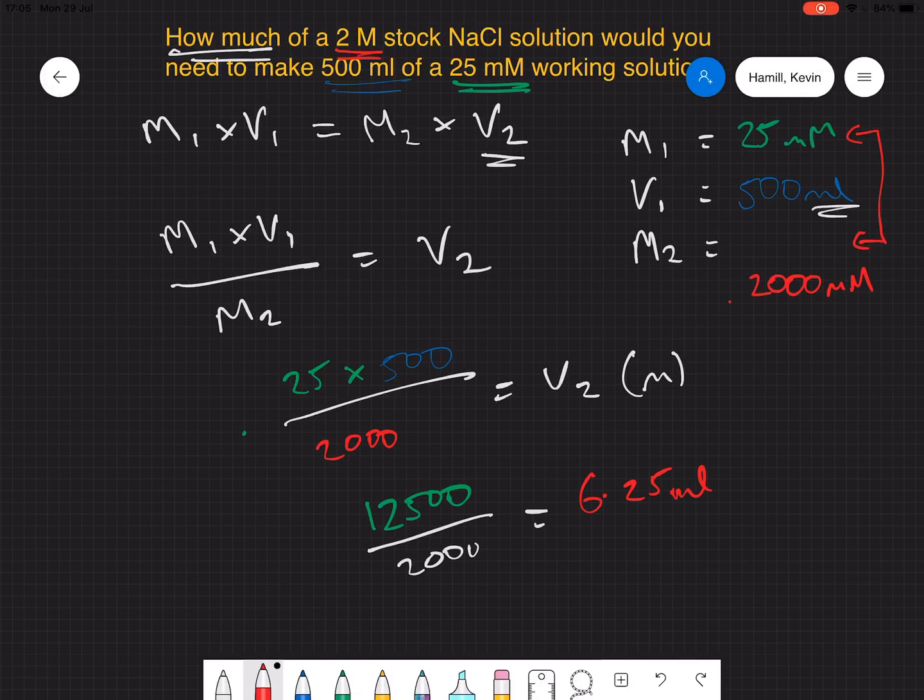So what that means, in practical terms, is we're going to have 6.25 mils of our stock solution, and then we're going to make up the rest of the volume with whatever we're diluting it in, most likely going to be water in this case.